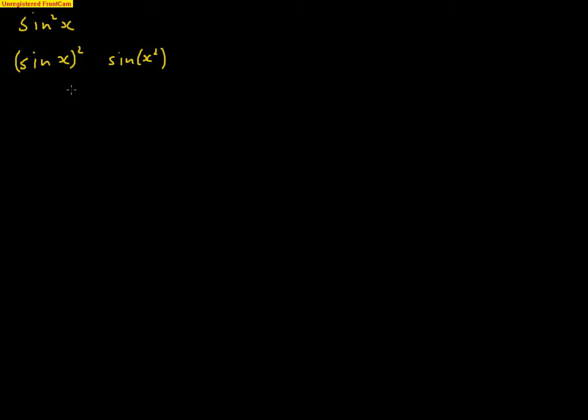So, we don't want to write the square at the end, otherwise it's unclear which part we're trying to square, whether we're inside the function or whether we're trying to square the whole thing. So, to distinguish the difference between them, we talk about the square, or we put the square in between it.